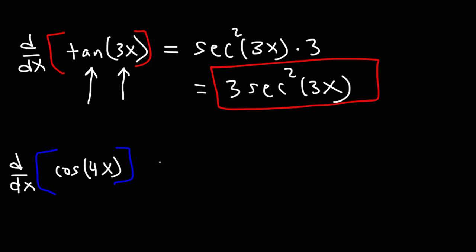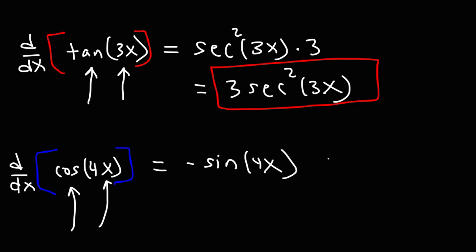Now let's move on to the next example. What is the derivative of cosine? The derivative of cosine is negative sine. We're going to keep the angle the same, and then the derivative of 4x is 4. So the final answer is negative 4 sine 4x.